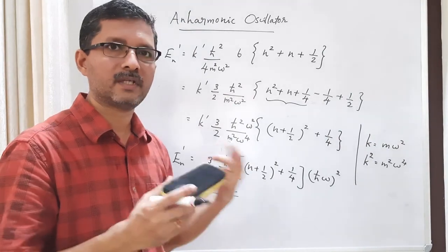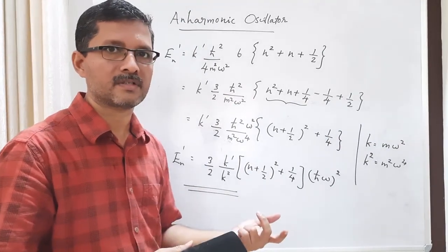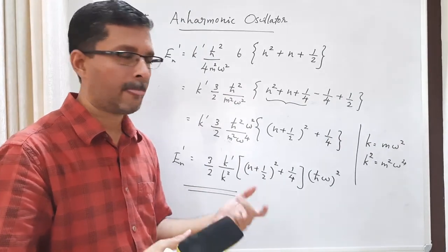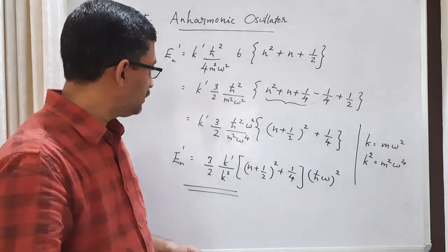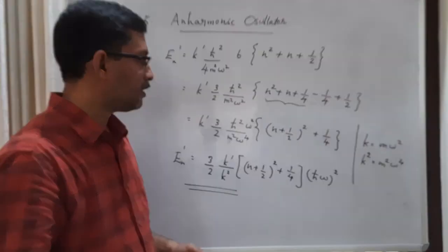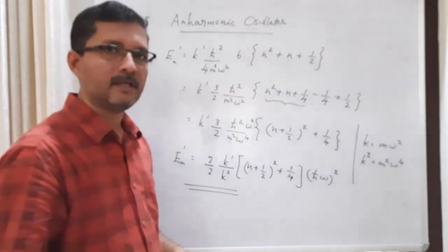This is the first-order correction in energy for a harmonic oscillator with a quartic perturbation, also called a quartic anharmonic oscillator.